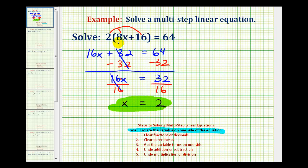Which means if we replace x with two in the original equation, it should make the equation true or satisfy the equation. And let's go ahead and check that. We want to verify that two times the quantity of 8x plus 16, when x is two, is equal to 64.